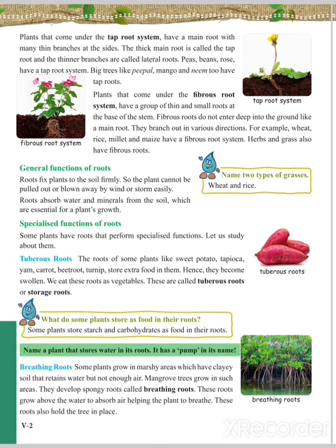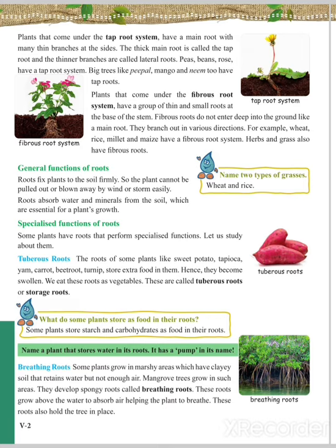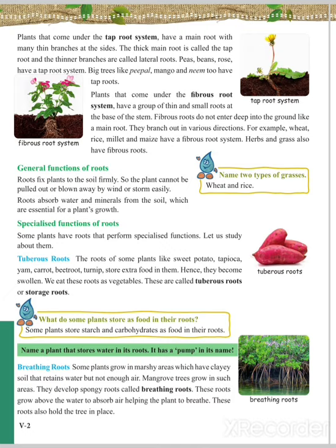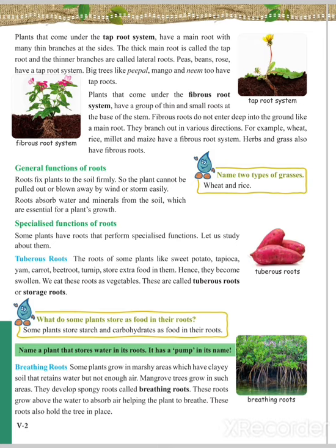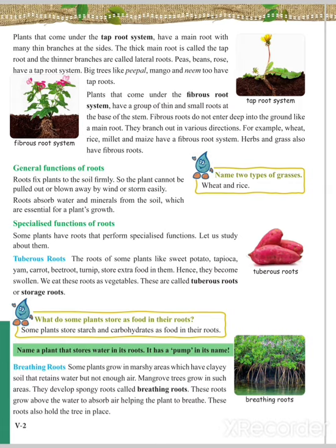Some plants have roots that perform specialized functions. For example, tuberous roots: the roots of some plants like sweet potato, tapioca, yam, carrot, bitter root, and turnip store extra food in them, causing them to become swollen. We use these roots as food because they store carbohydrates and starch, which are useful for us.